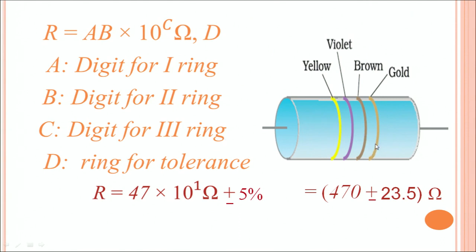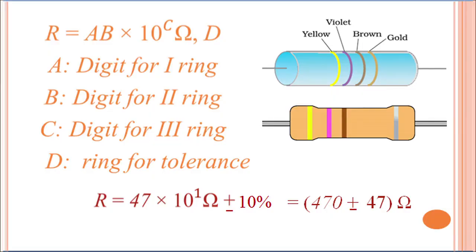What is the significance of golden color? The golden color signifies that this has a tolerance of 5%. 5% means whatever is the digital value that you have just read, 470 ohms, if you use a multimeter to read the value exactly, you can have a value of 470 ohms plus minus 5% of that. That means the value can turn out to be 470 minus 23.5 to 470 plus 23.5 ohms. If instead of golden color, you have a silver ring, then silver ring signifies a tolerance of 10%. In that case, the value would be 470 minus 47 ohms to 470 plus 47 ohms.